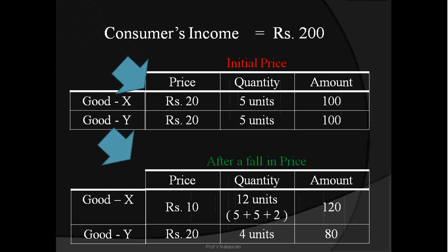After a fall in the price, the price of good X falls from 20 rupees to 10 rupees but the price of good Y doesn't change. Good X has become relatively cheap, which makes the consumer buy 12 units. To account for the increase in quantity demanded of good X: 5 units he already purchased, another 5 units due to income effect, and 2 units he substitutes in place of 1 unit of good Y — he sacrifices the purchase of 1 unit of Y and diverts the 20 rupees to buy 2 units of X. Thus he manages to buy 12 units of good X after a fall in its price.